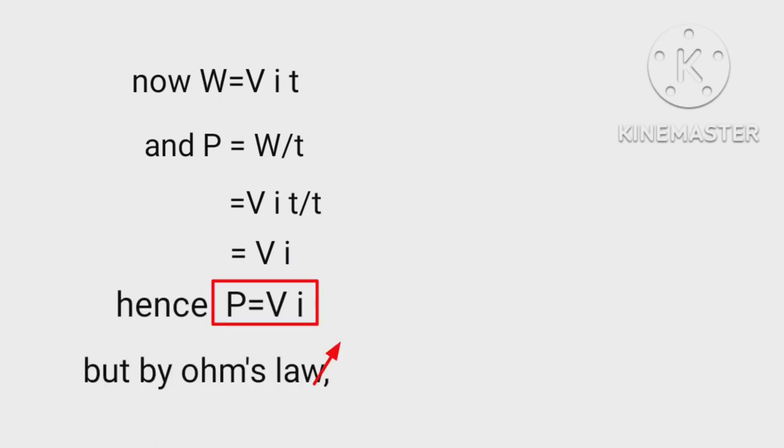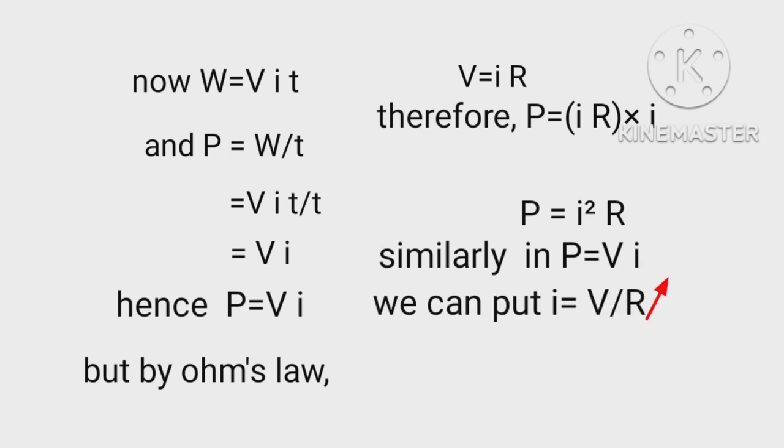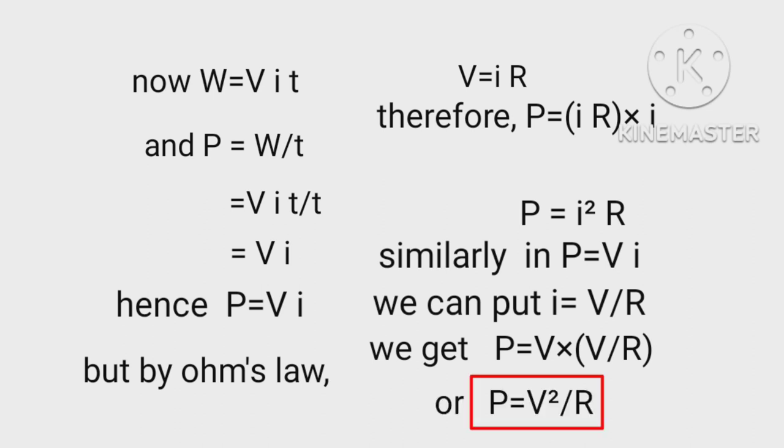But by Ohm's law, V equals i R. Therefore P equals i R into i equals i squared R. Hence P equals i squared R. Similarly in P equals V i, we can put i equals V upon R. We get P equals V into V upon R, or P equals V squared upon R.